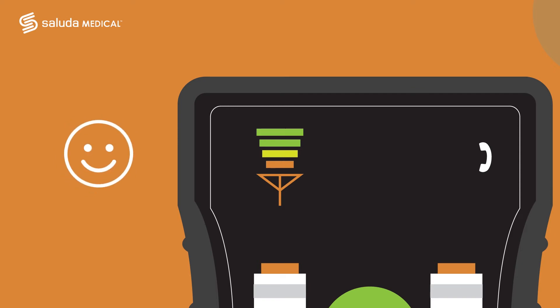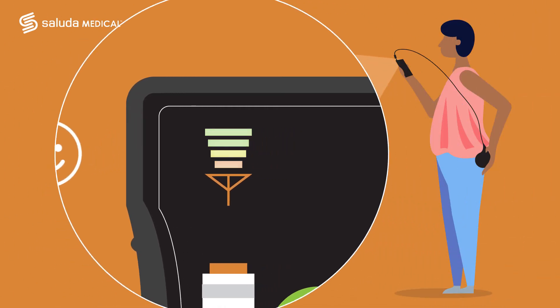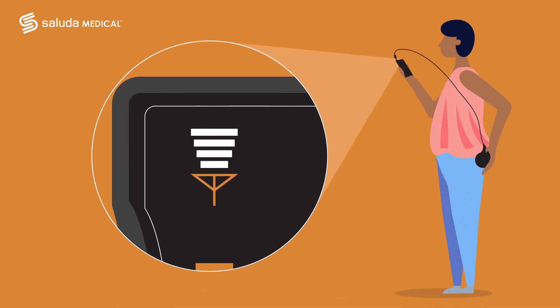To improve the quality of the link between the charger coil and the EVOKE closed-loop IPG, move the coil closer to the implant.